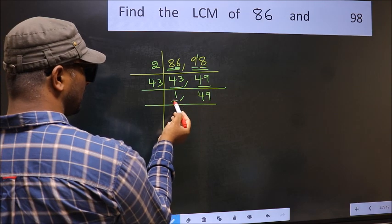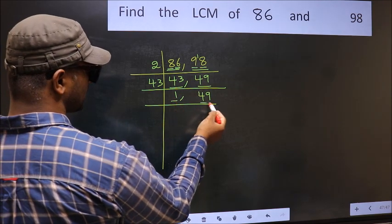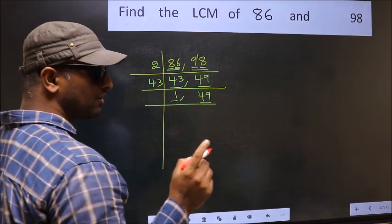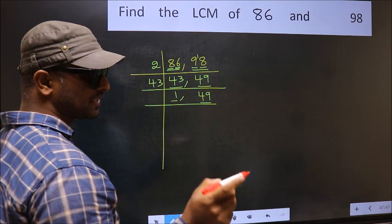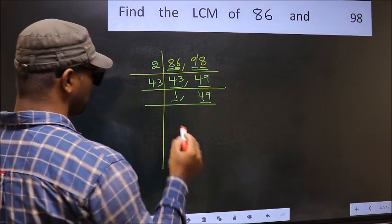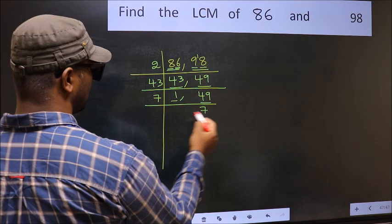Now we got 1 here. So focus on the next number 49. Always remember 7 into 7, 49. That is 7 times 7 is 49.